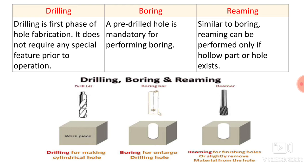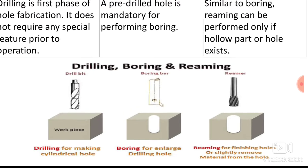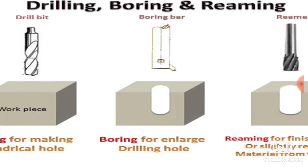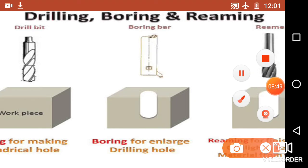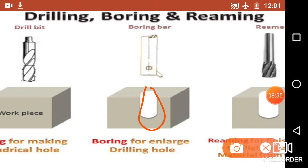For boring, a pre-drilled hole is mandatory for performing the boring operation. Here in the second diagram you can see that a hole is compulsory — then and only then you can perform the boring operation. The boring bar goes inside this hole and enlarges its diameter. The boring bar has a cutting edge at its end, goes inside the previously drilled hole, and enlarges its diameter by removing material along the periphery of the hole.